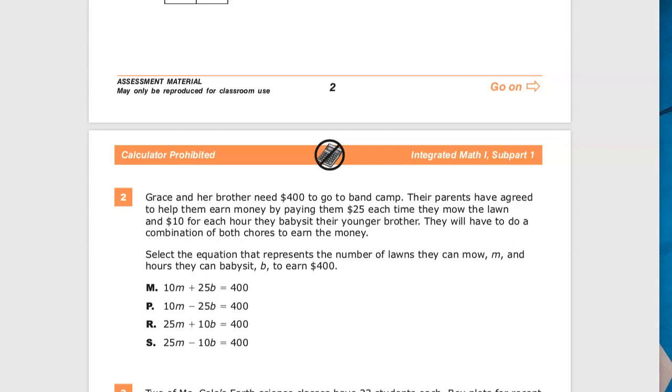Question number two says, Grace and her brother, who goes unnamed, maybe he is also named Grace, need $400 to go to band camp. Their parents have agreed to help them earn money by paying them $25 each time they mow the lawn and $10 for each hour they babysit their younger brother. They will have to do a combination of both chores to earn the money.